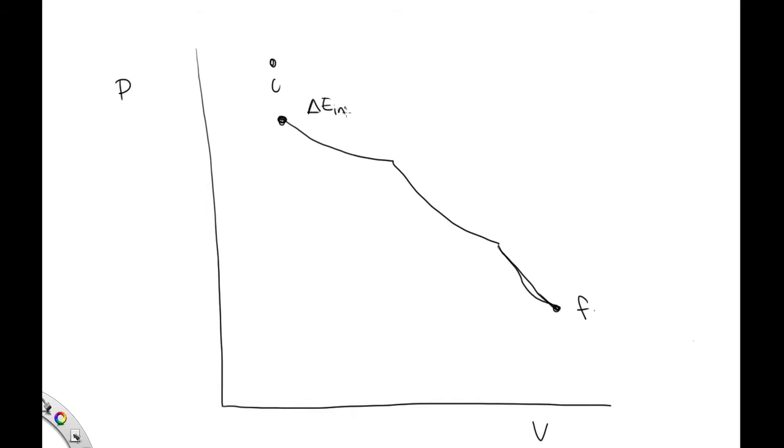So isothermal tells us that the change in internal energy is equal to 0. We're told in the question that the work done is 40 joules in magnitude. It's expansion, so that's minus 40 joules.